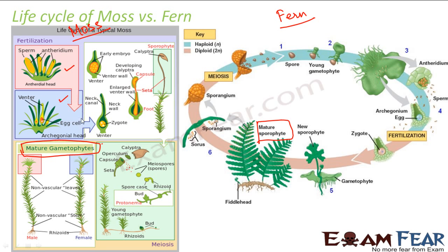In moss, from the gametophytes, male and female gametes are formed and they fuse to form the zygote. From the zygote a sporophyte develops, and from the sporophyte spores are formed which germinate to form the gametophyte — so the sporophyte is the intermediate phase. In fern, the process goes the other way: the gametophyte is the intermediate phase, and the sporophyte is dominant.